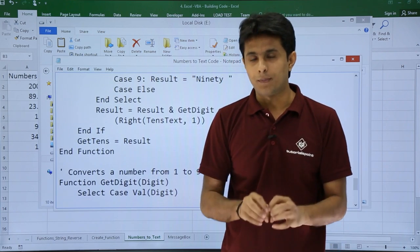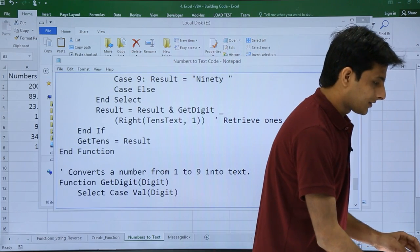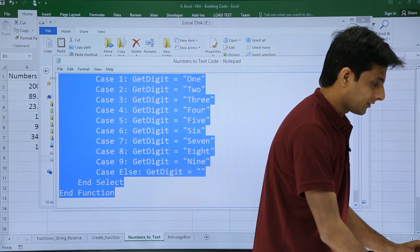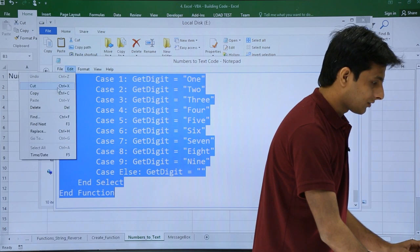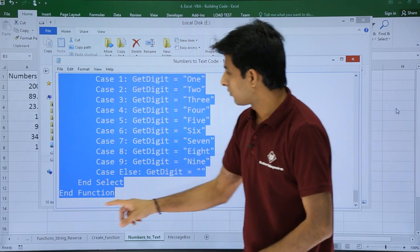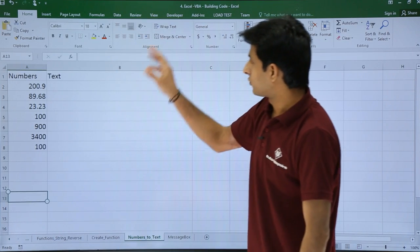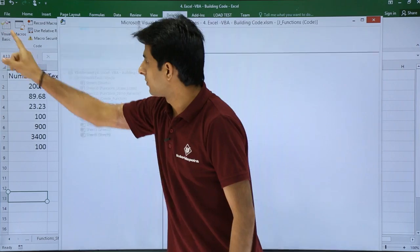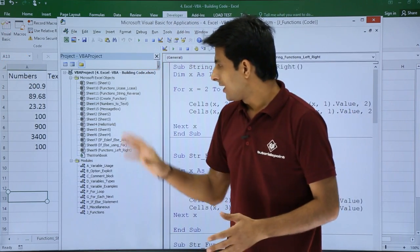You have to just copy this code first. I'll press Control+A and copy, and I'll come back to this place. I've copied the code and I'll come back to the macros. Developer, and I'll go to Visual Basic.